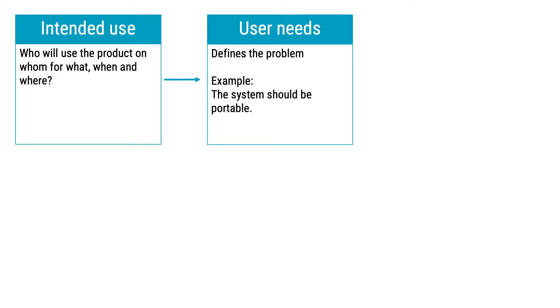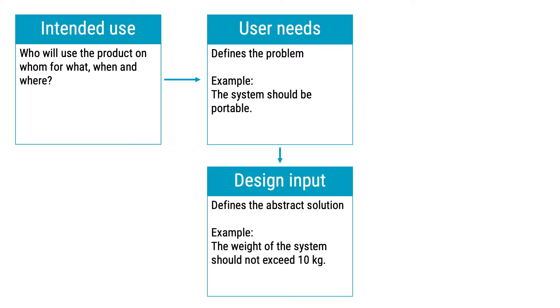Now let's look at user needs. User needs should describe what the users need, and they should be aligned with the intended use. A simple example of a user need is that the system should be portable. User needs should then be translated into design inputs, which are specific technical requirements that realize the user needs when implemented in a design. In this case, portable means that the weight should not exceed 10 kilograms. Getting the translation of user needs into technical requirements right is a really critical thing for the success and customer acceptance of your product.